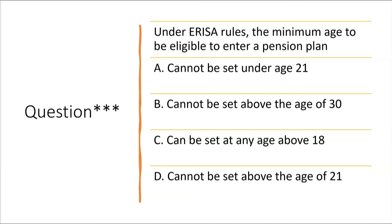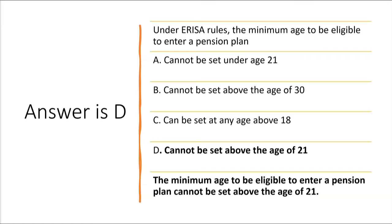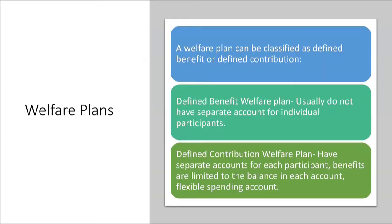Under ERISA rules, the minimum age to be eligible to enter a pension plan: the answer is D — the minimum age cannot be set above 21. It could be set below age 21, which would encourage younger employees to join. But if someone has worked 12 months or 1,000 hours and is age 21 or older, they must be eligible to enter the pension plan. The company cannot set the minimum eligibility age above 21.